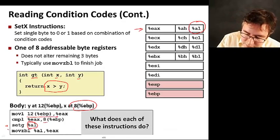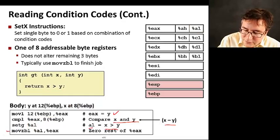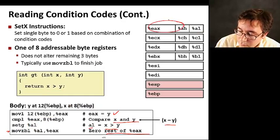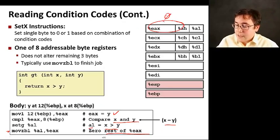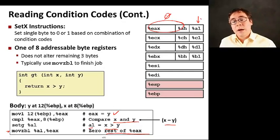And this instruction here just zeros the rest of EAX, so it makes this whole thing here 0. So in the end, AL is going to be set to 1 if X is greater than Y, and it's going to be set to 0 otherwise.